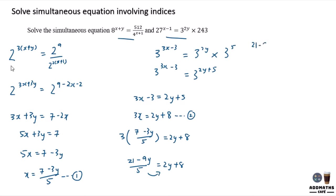You will have 21 minus 9y equal to 10y plus 40. And bring all the y to one side, numbers to one side. So 21 minus 40 equal to 10y plus 9y. So negative 19 equal to 19y. Y will be equal to negative 1.